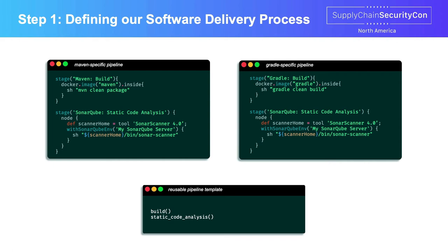The big aha moment is that regardless of the build tool being used, the process is largely the same: build, then static code analysis. On the bottom half of the screen, you can see a reusable pipeline template that calls out those two steps — build and static code analysis. Wouldn't it be great if instead of defining the pipeline for each team individually, you could put in a central source code repository a reusable pipeline template — build and static code analysis — and then plug and play, letting each team pick whether they're using Maven or Gradle?